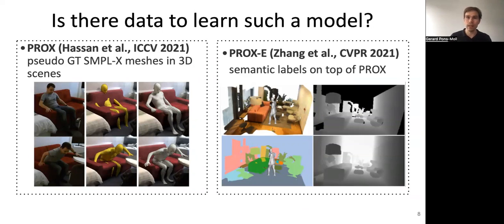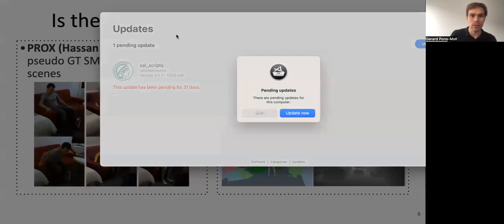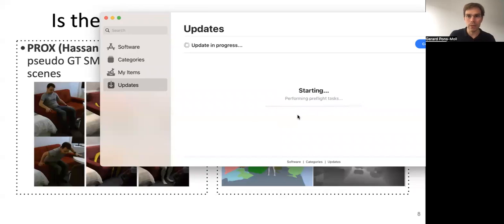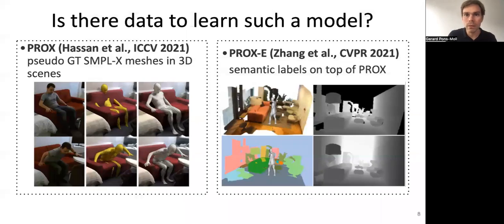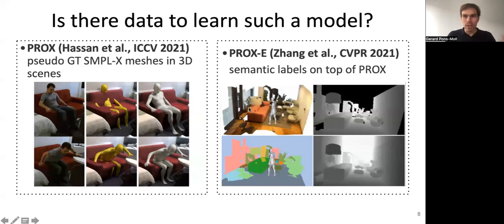To go about this, the first thing we need is data and a good capture method. There is always a loop between capture and synthesis. For example, the PROX method allows you to reconstruct the 3D human pose conditioned on the scene, which leads to better results by resolving intersections with the environment and so on.